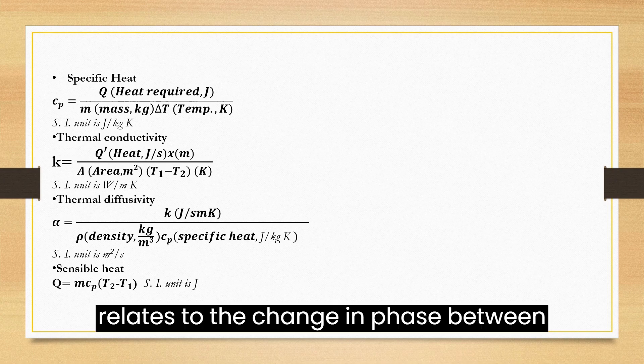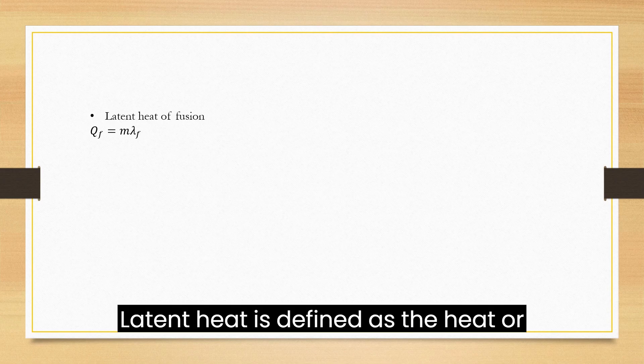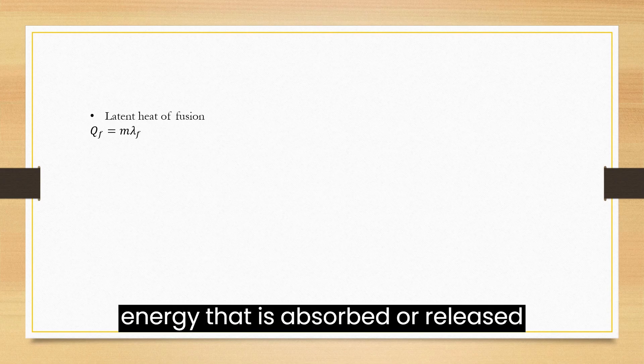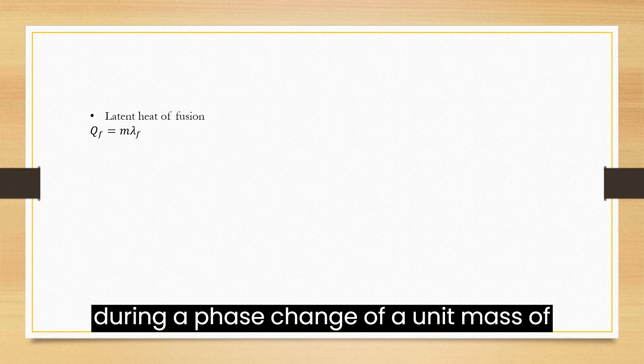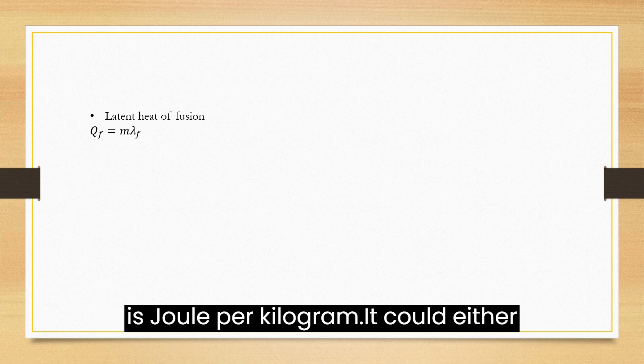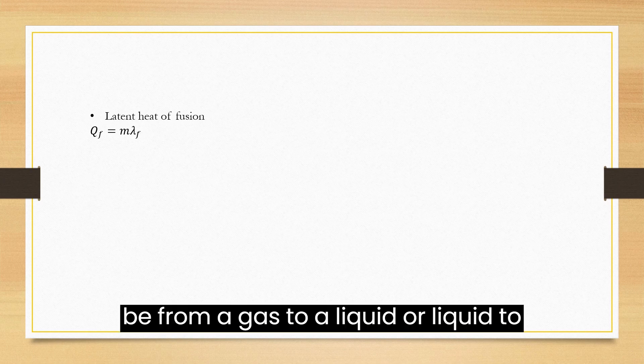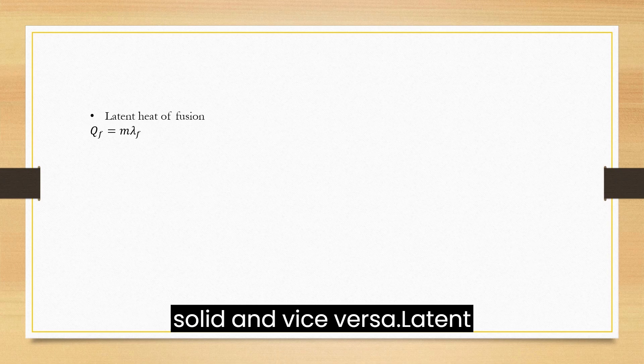But latent heat relates to the change in phase between solids, liquids, and gases. Latent heat is defined as the heat or energy that is absorbed or released during a phase change of a unit mass of a substance. Its SI unit is Joule per kilogram. It could be from gas to liquid, liquid to solid, or vice versa.